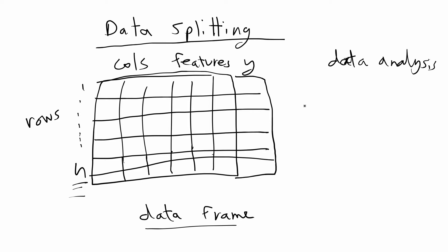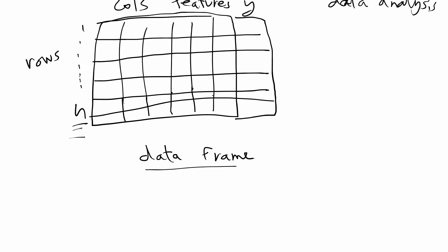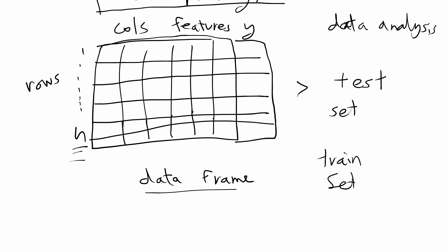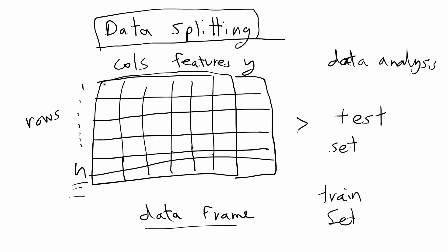When you're fitting models to data in machine learning, you first want to do data splitting. With data splitting, you're going to randomly sample from your entire data frame a subset of this data and split it into two pieces. From your original data frame or data set, you want to split that into a test set and a train set. You randomly select a subset of the rows and all the columns, put a random selection into the test set, and the remaining rows go to your train set.